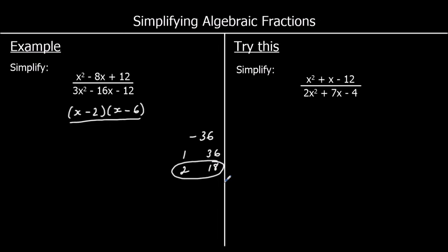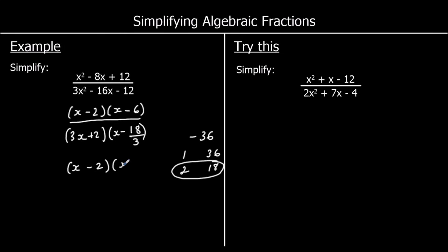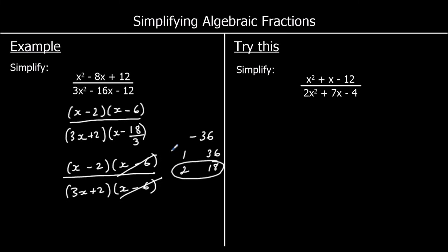So if we expand the bracket, we'd want plus 2 and minus 18 as our split terms, giving plus 2x and minus 18x. I'm going to write 3x in one bracket and x in the other, which makes 3x squared. The term I multiply by 3 I'll write as 18 over 3, which simplifies to 6. So the bottom factorises to (3x plus 2)(x minus 6). So x minus 6 is a factor of the top and the bottom, and we can divide both by x minus 6, which leaves x minus 2 over 3x plus 2.